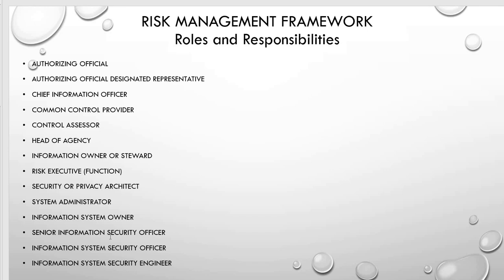The RMF roles we're going to discuss in this video are: authorizing official, authorizing official designated representative, chief information officer, common control provider, control assessor, head of agency, information owner or steward, risk executive function, security or privacy architect, system administrator, information system owner, senior information security officer, information system security officer, and information system security engineer. Let's dive in and look at their responsibilities.